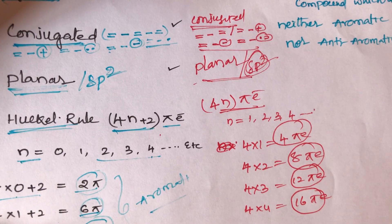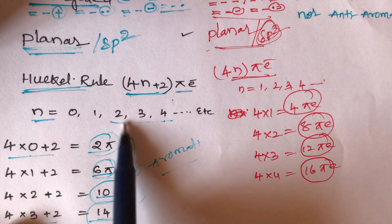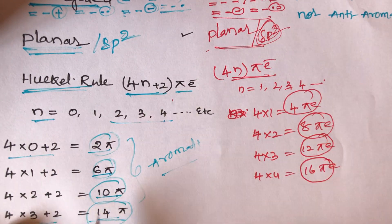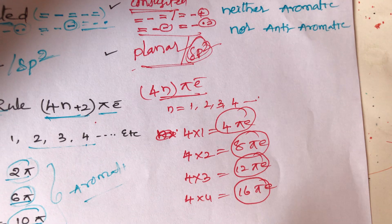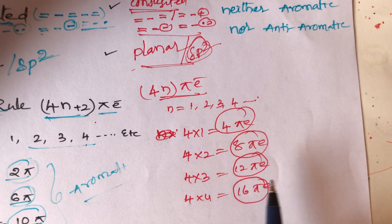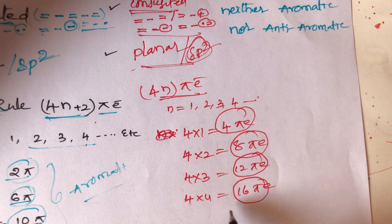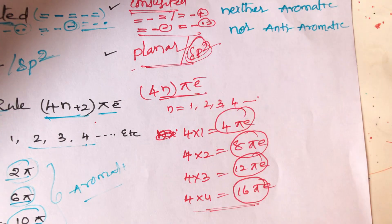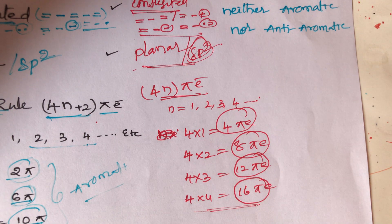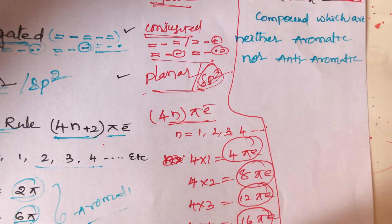To summarize: aromatic compounds contain 2, 6, 10, 14 pi electrons; anti-aromatic compounds contain 4, 8, 12, 16 pi electrons — those belong to the anti-aromatic category.